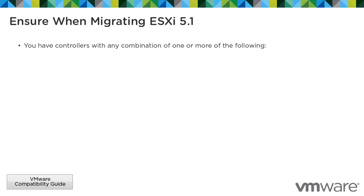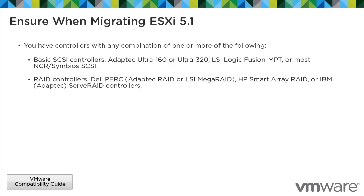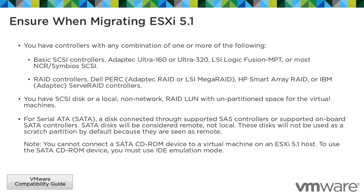Ensure you have controllers with any combination of one or more of the following. Ensure you have a SCSI disk or a local non-network RAID LUN with unpartitioned space for the virtual machines. For a serial ATA disk, ensure it is connected through supported SAS controllers or supported onboard SATA controllers. SATA disks will be considered remote, not local, and will not be used as a scratch partition by default because they are seen as remote.